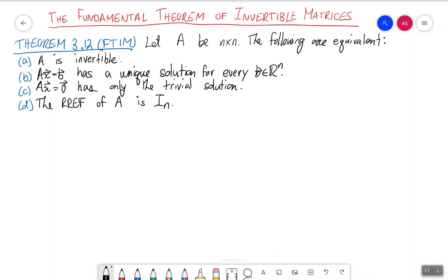Let's give you the idea of a proof of this. Start with A implies B. The proof of part A implying part B is actually just Theorem 3.7. How about the proof that B implies C? Well, just set B equal to zero.